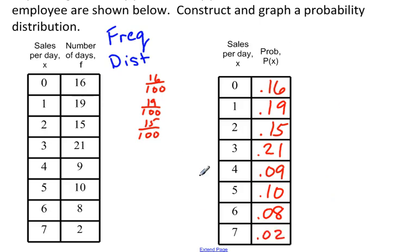Another thing to think about with probability distributions is it's really just a relative frequency distribution. Because didn't I just take the frequencies and turn them into percents or decimals according to the total amount? 16 out of the total is 0.16, 19 out of the total amount is 0.19, and so on all the way down the list.